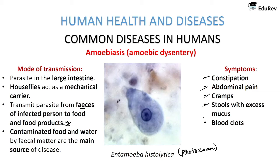The symptoms of amoebiasis include constipation, abdominal pain and cramps, stools with excess mucus and blood clots. When learning about various common diseases, important points to note are: the causative agent, whether it is a bacterium, virus, protozoa, or helminth, the mode of transmission, and the symptoms caused.